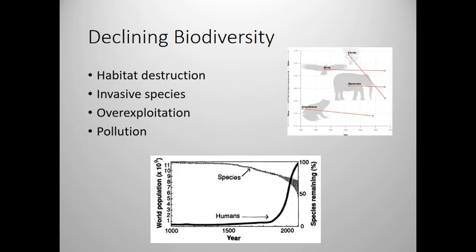It's estimated that by 2100, we will have half the number of plant and animal species that we have today. We see this across the board — a huge dip in corals, birds are decreasing, mammals are decreasing, amphibians are really decreasing. Pretty much any group of organisms you look at, we're losing species.